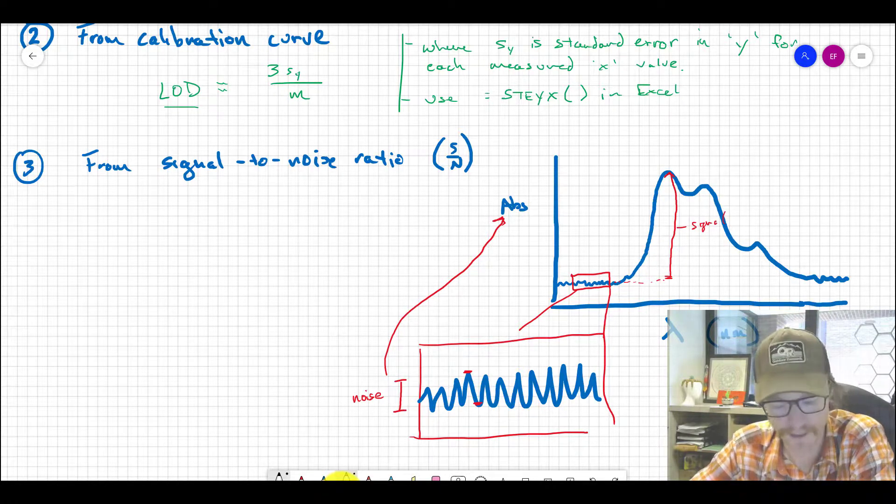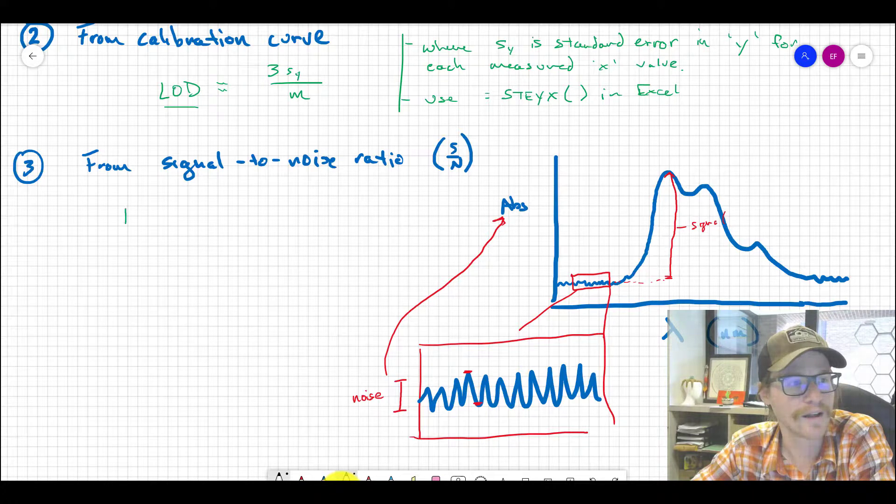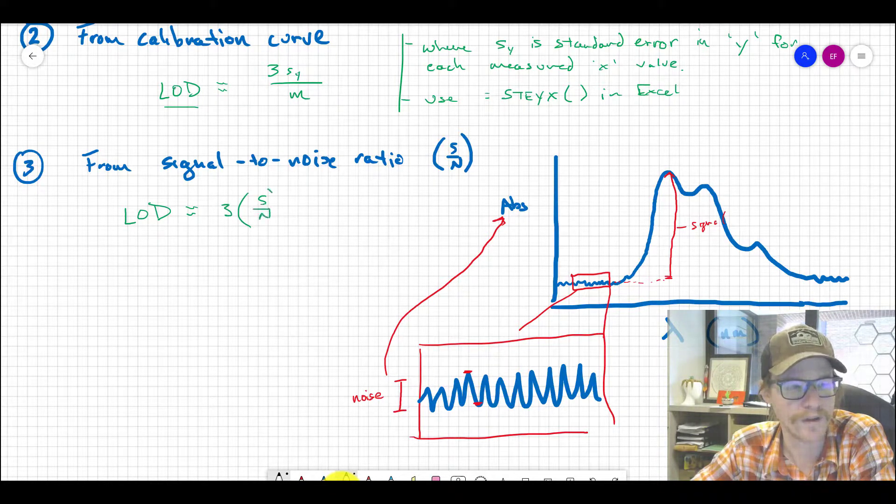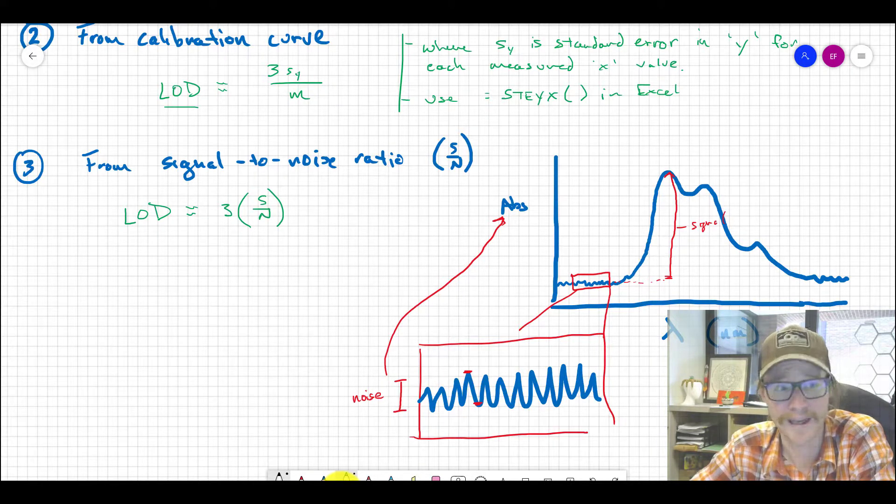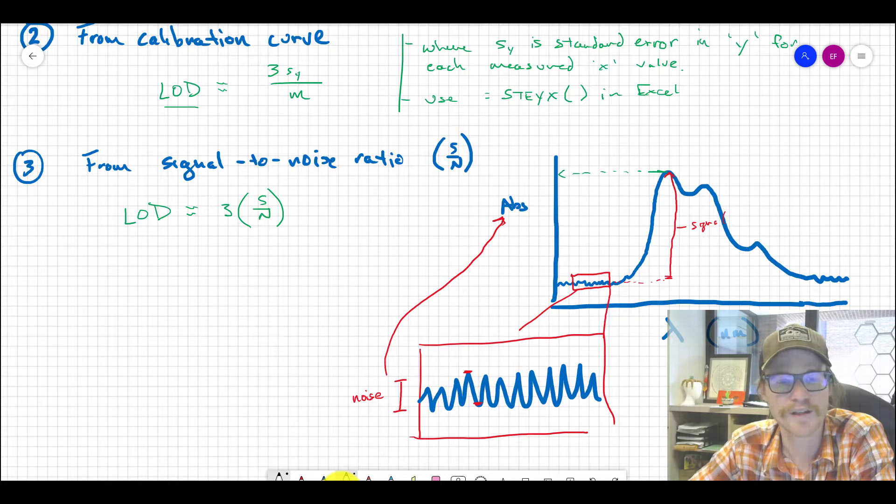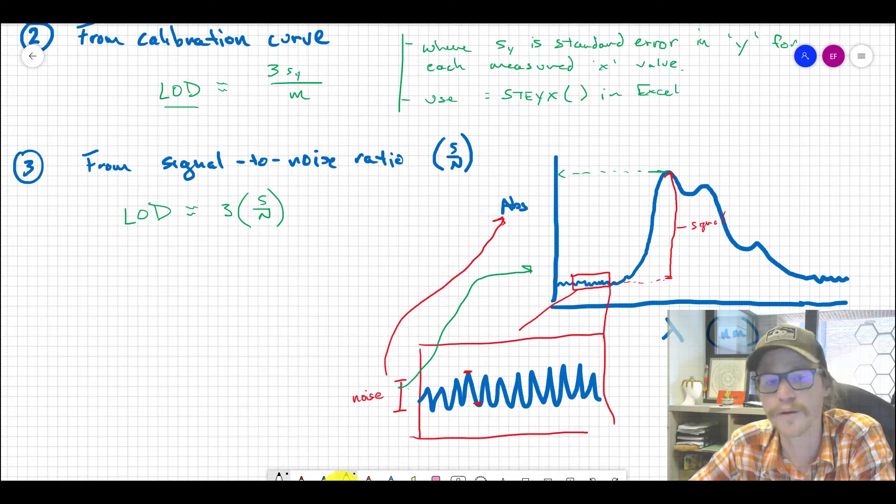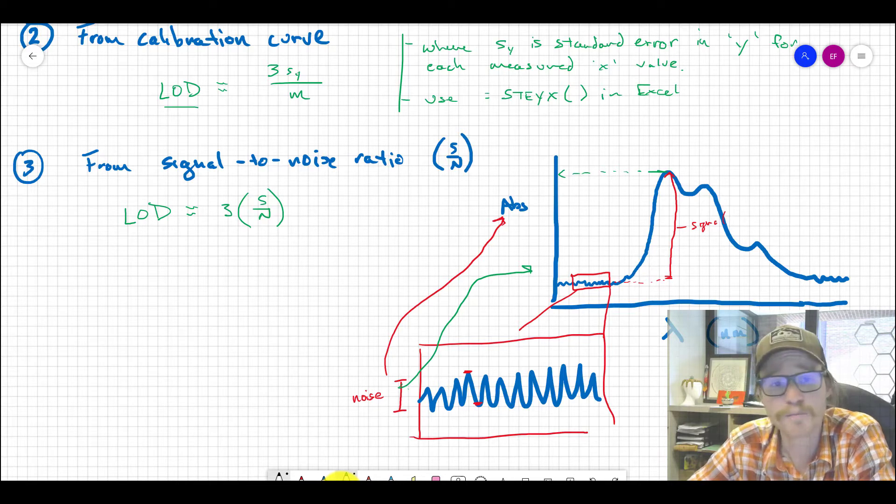For an estimate of LOD using this method, we can take three times the signal-to-noise ratio—signal being the value measured in absorbance units versus the noise value in absorbance units. This is a quick and dirty way, but it's nice because if you have a spectrum, you can quickly estimate the detection limit just by looking at it. You don't even need a calibration curve.